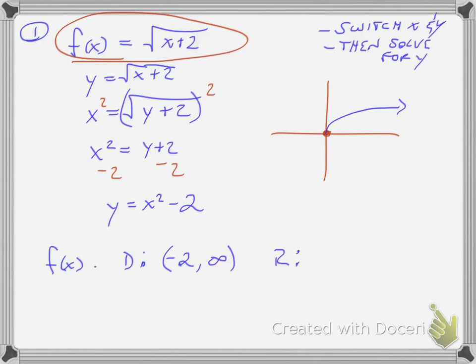My range, since this graph wouldn't have been shifted up or down from the parent function. The parent function looks like this. And this graph isn't shifted up or down, so the range is going to be the same as that parent function, which is from zero to infinity.